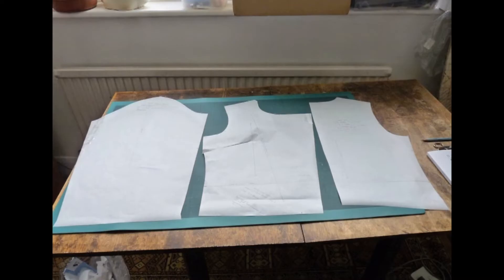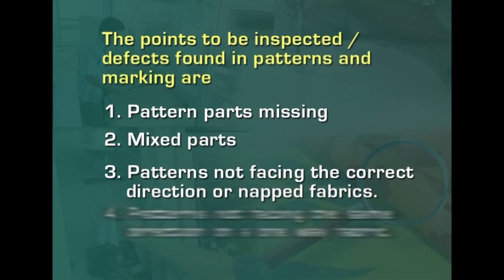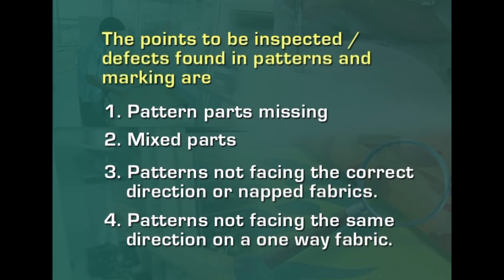Mixed parts means a marriage of wrong size parts happens, making it difficult to correct. Then patterns not facing the correct direction — in case of napped fabrics, which are generally finished one way, all parts should be cut in the same direction. This will also become a defect if patterns are not faced in the correct direction. Patterns not facing the same direction on a one-way fabric is also a defect.